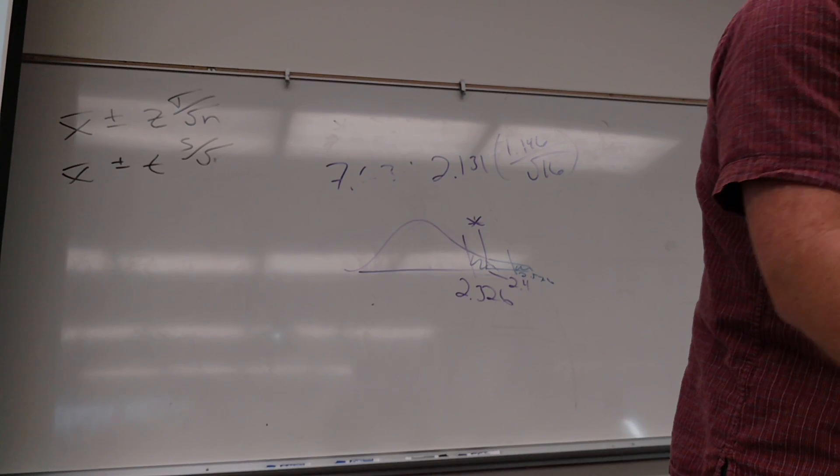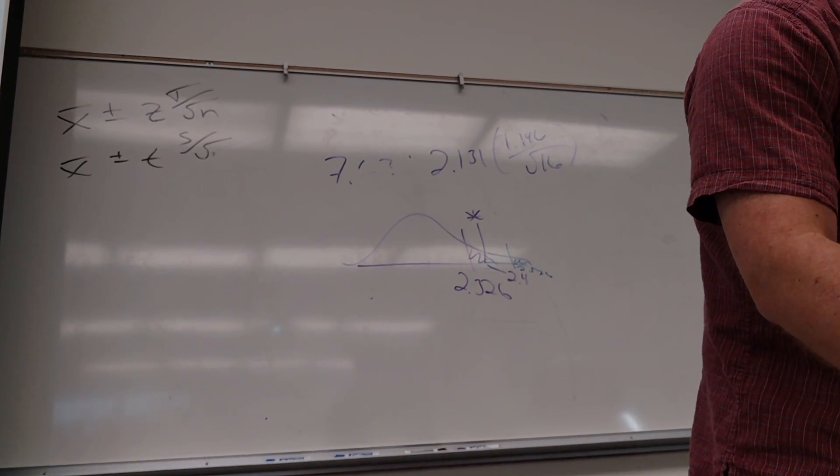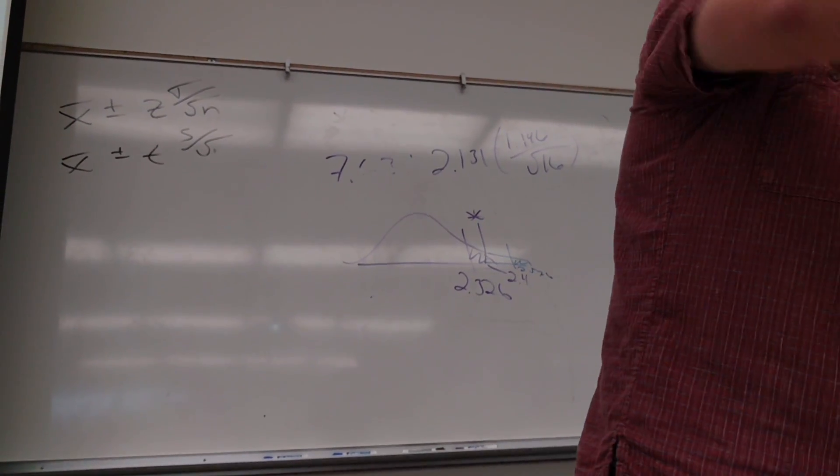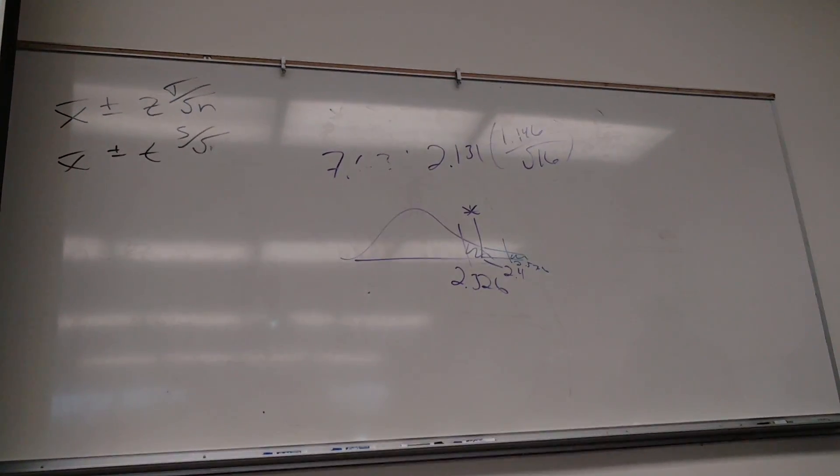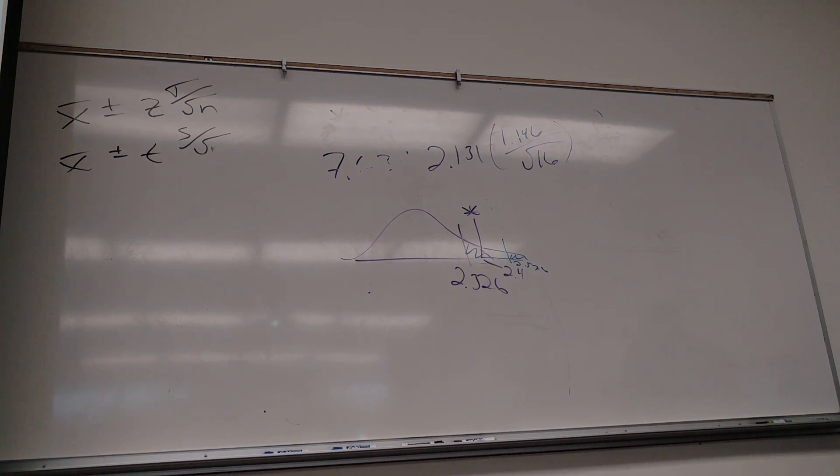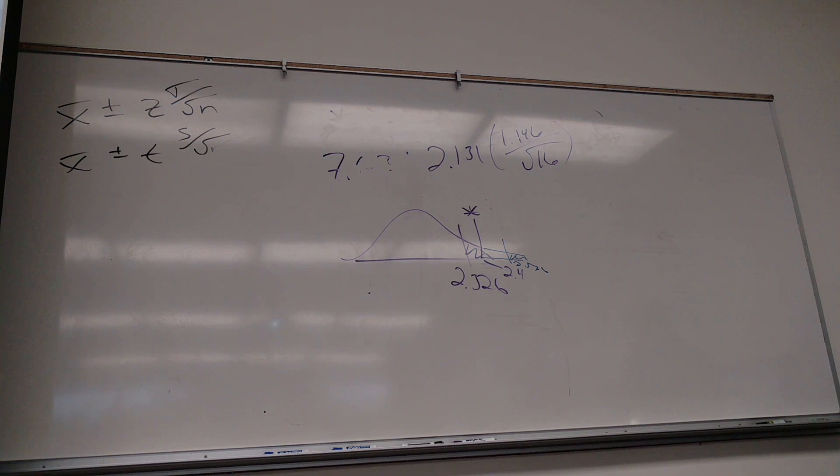Take out a Z score chart. So when you look up 1.04, you get 0.8508, but is that the area in my tail? No. That's the area down here. So 0.8508.